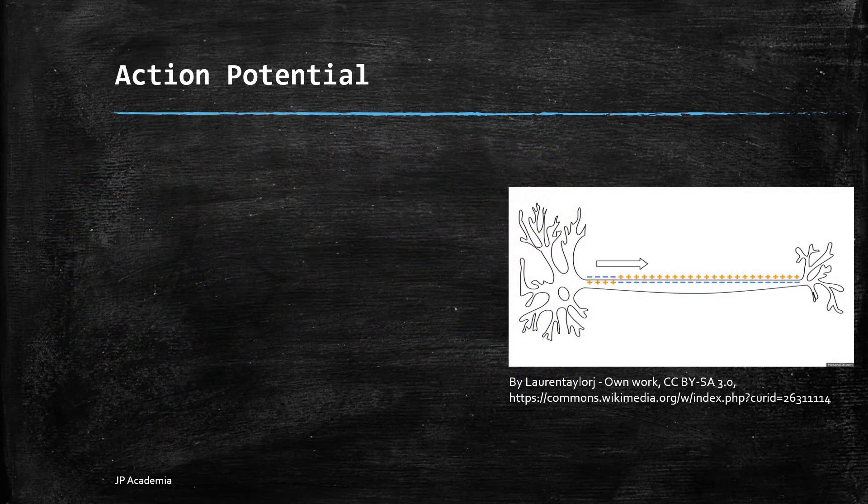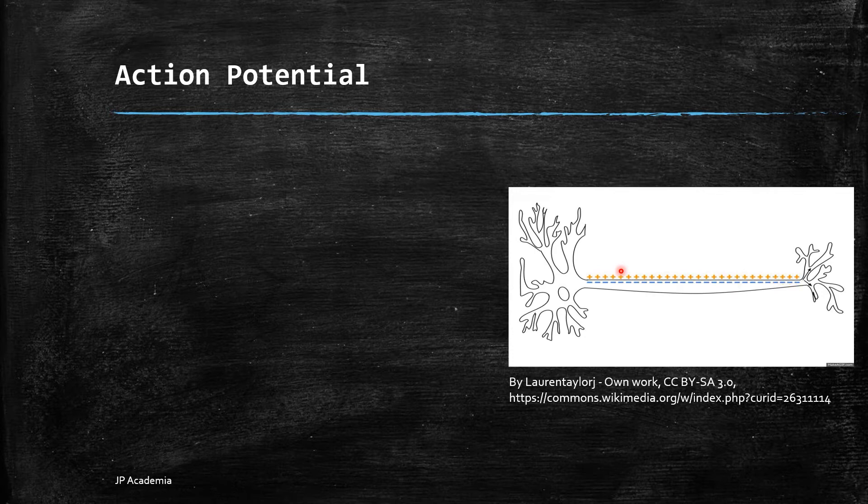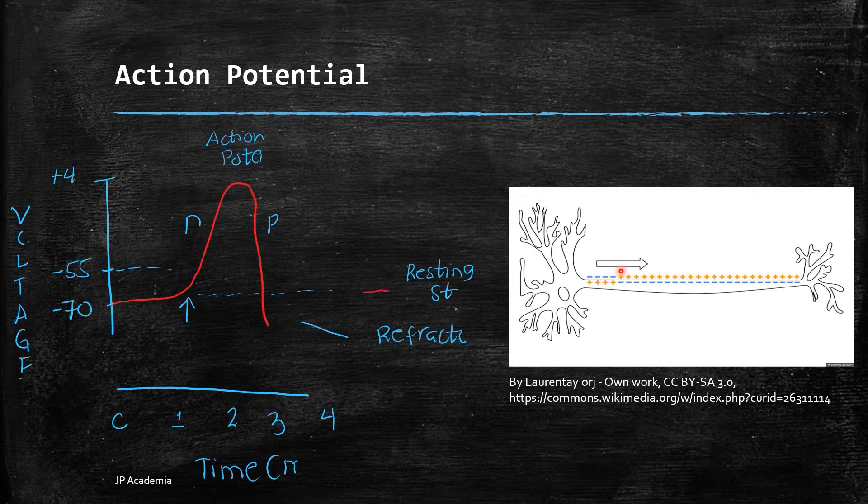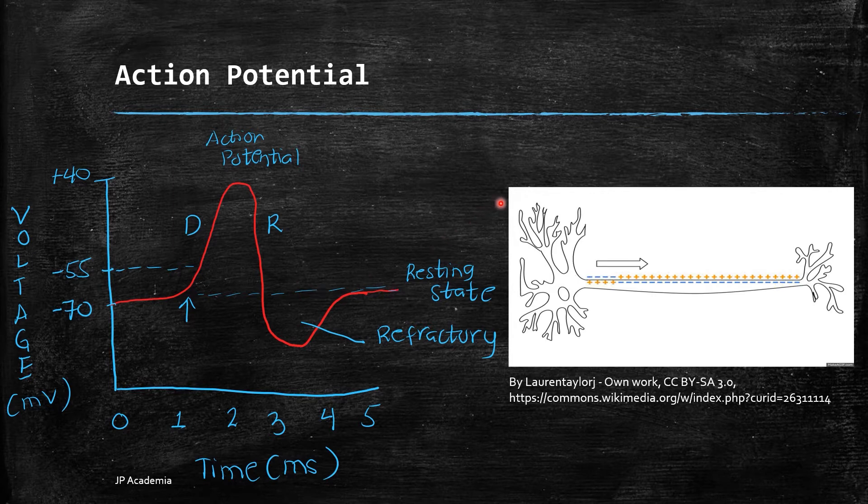An action potential is observed when the membrane potential of a cell rapidly rises and falls. This occurs in different types of animal cells such as muscle cells and neurons. In neurons, it is the propagation of signals along the axon going to the synaptic bulbs at the end of the axon. I have here the approximate shape of a common action potential.